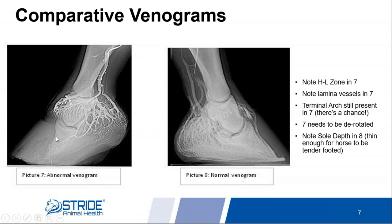Notice that this foundered, laminitic foot is growing with very poor hoof quality at the front because blood supply is lost there. The heel is still growing because there's some blood supply to the heel. One good thing: you can still see the terminal arch is present, so there's a chance. Comparing the left with the right venogram, you can see the definite difference in blood supply. The venogram on the right shows good blood supply — though I'll explain why this is not actually a good foot.